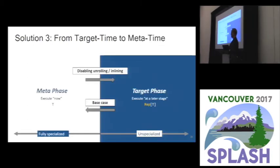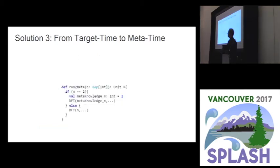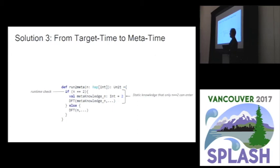The last challenge — crossing phases — is already partly solved: going from Rep to T is trivial in LMS. Going from T to Rep, we use a simple trick: a runtime check. If you have a dynamic value known only in the generated code, by doing a runtime check we know statically its value inside the branch — for example, that the value is 2 — and therefore we can recurse into ourselves with that value known at meta time. This is essentially our base-case generation.